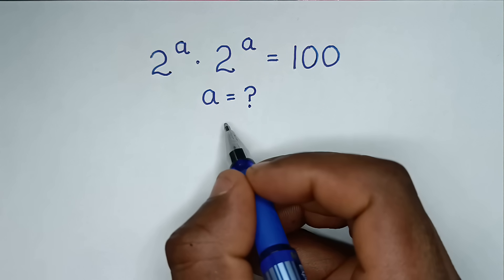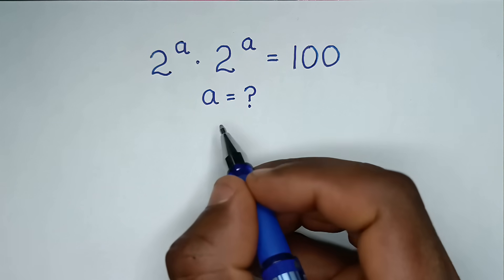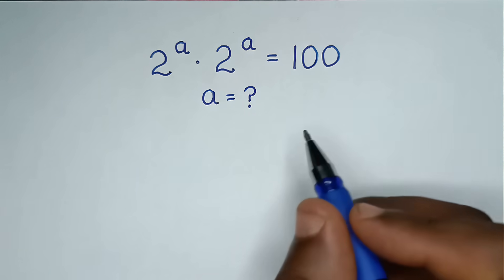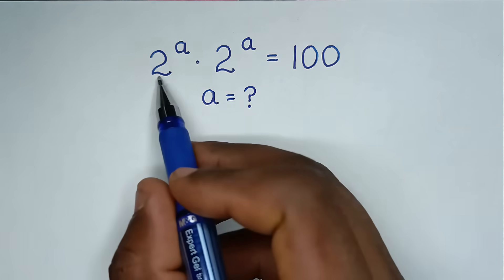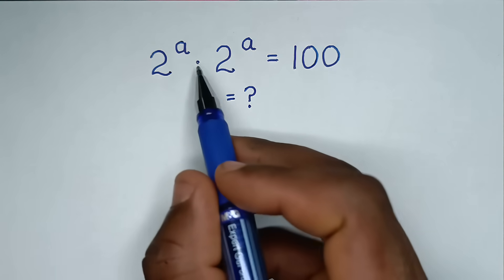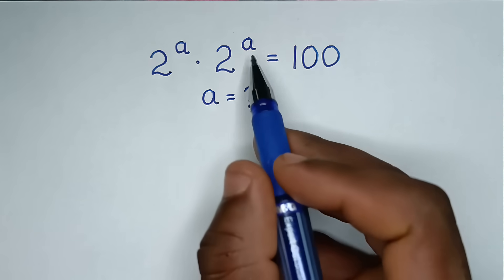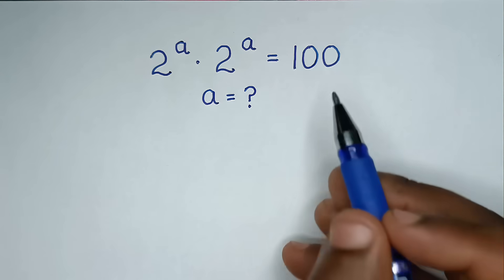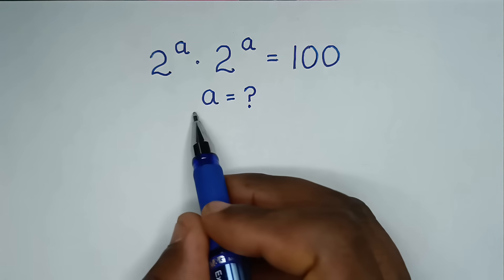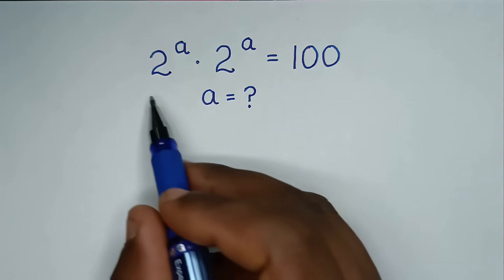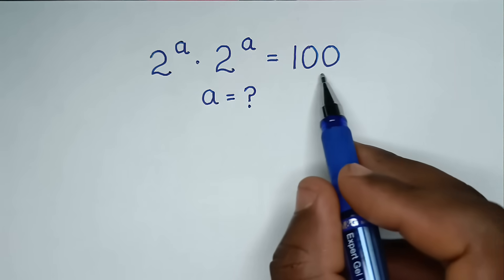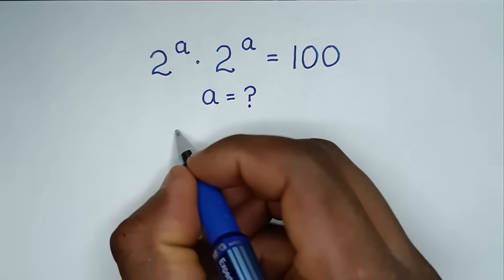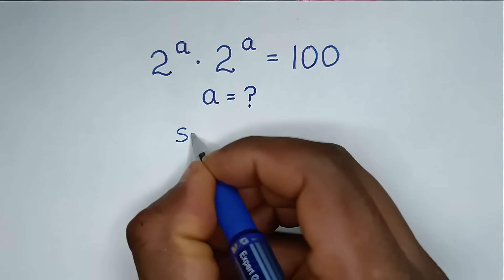Hello, you are welcome to solve this math problem, which is 2 power a times 2 power a is equal to 100, to find the value of a from this equation. Now, solution.